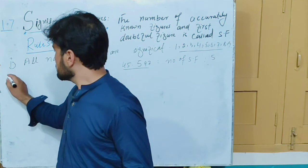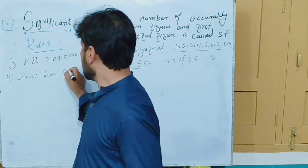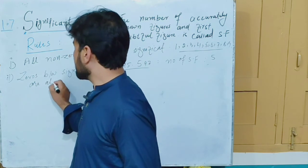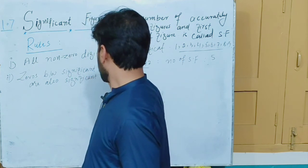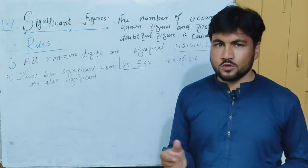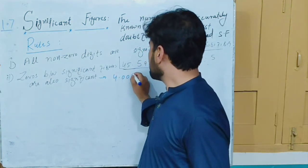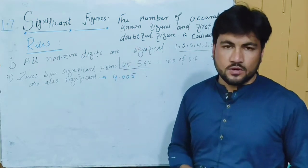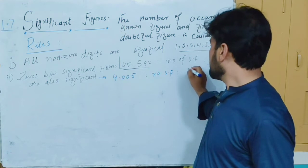The second rule is: zeros between significant figures are also significant. For example, the number 4005 — the zero between the 4 and the 5 is a significant figure. So in 4005, the number of significant figures is 4.